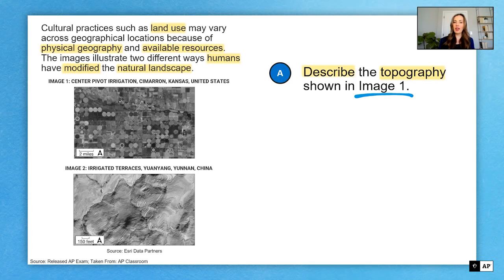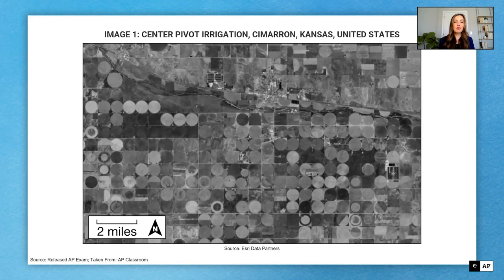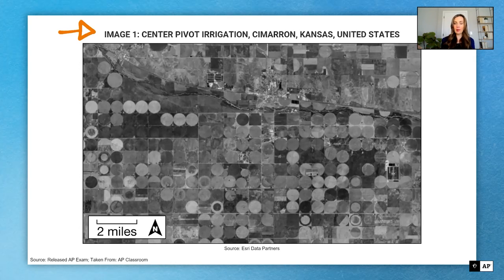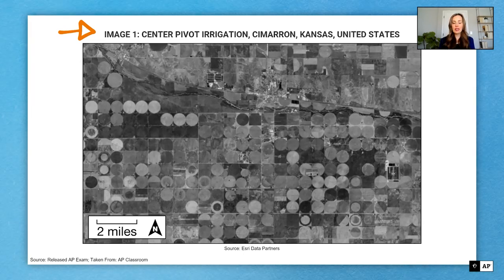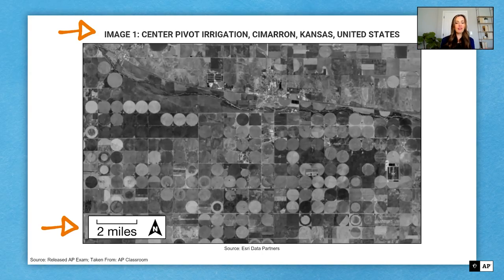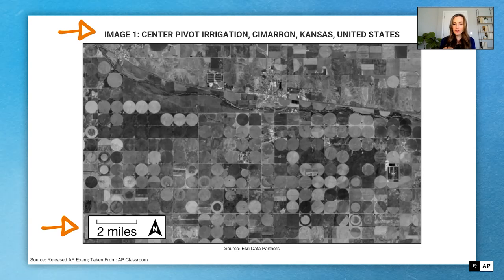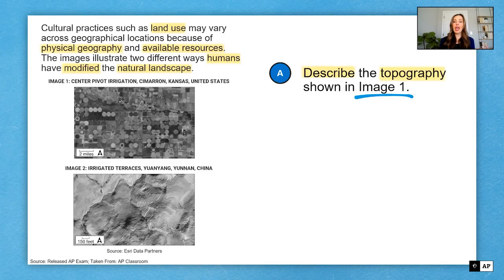Before I jump in, I need to take some time with image one. So let's zoom in here and look at what we're actually working with. First of all, I'm going to notice the title of my image here. Center pivot irrigation. This is in Cimarron, Kansas in the United States. I see the various circles and squares. And I remember my teacher talking about that, showing me similar images. That's coming back to mind now. I also see the key. So it's illustrating how much land I'm looking at. That's going to be important as well. So now that I've taken some time to observe the image, seeing all of the different farms here, using center pivot irrigation, I can go back to part A and answer.